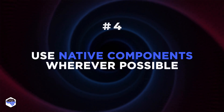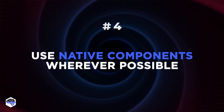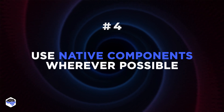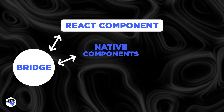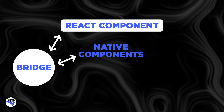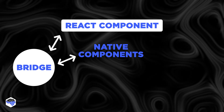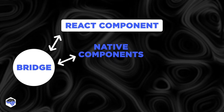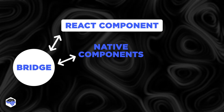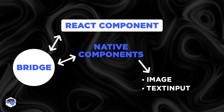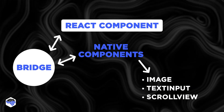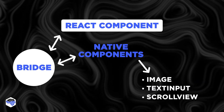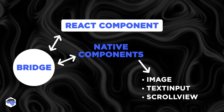Another way to optimize performance is to use native components wherever possible. Native components are written in native code and are optimized for performance. React Native provides many built-in native components such as Image, Text Input, and Scroll View that you can use instead of creating your own custom components.